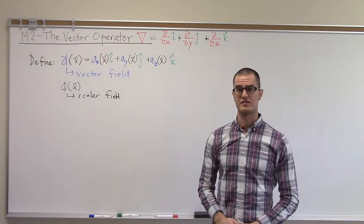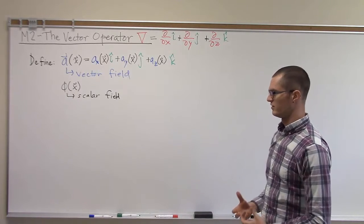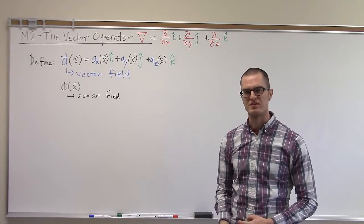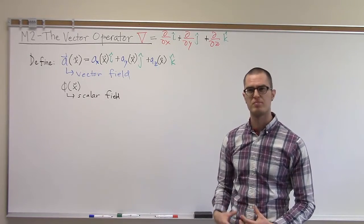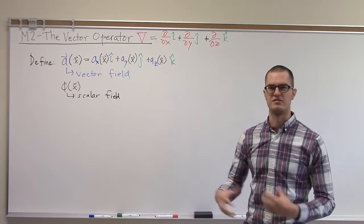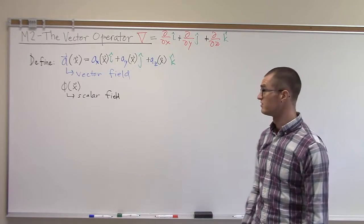Okay, so this will be the last in the sequence on the vector operator. In this one we're going to look at products of the vector operator with itself and also triple products between vector fields, scalar fields, and this vector operator. It's going to be a little bit of mixing and matching of multiplications here.